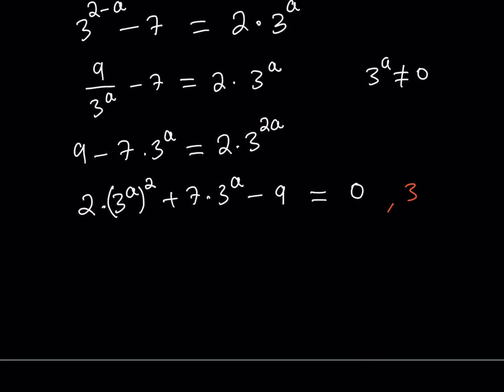This looks like a quadratic equation. If you make the substitution, which is what? If you call, hey, okay, 3 to the power of a, let it equal y. Awesome. Then, we have a quadratic y because this y is y. So, 2y squared plus 7y minus 9 is equal to 0.